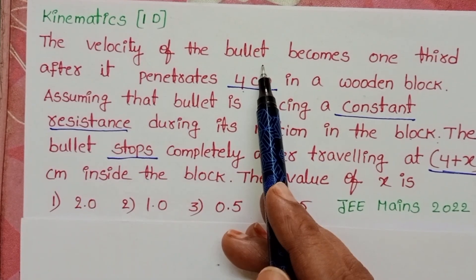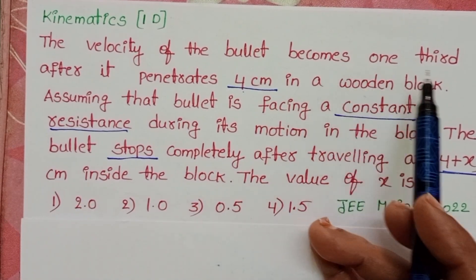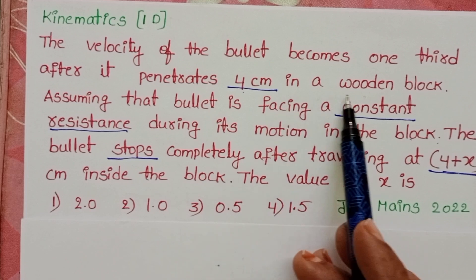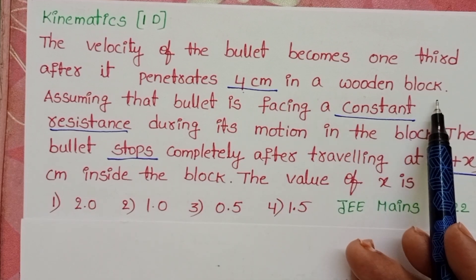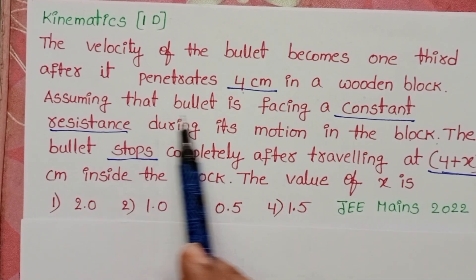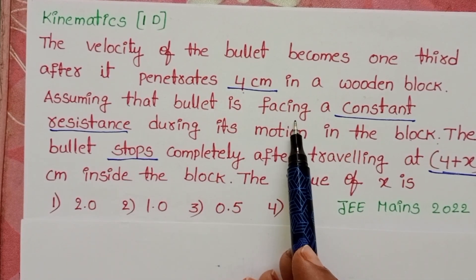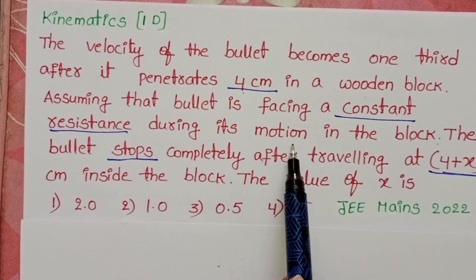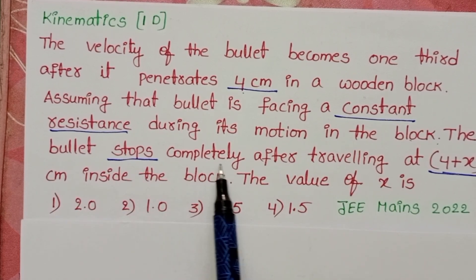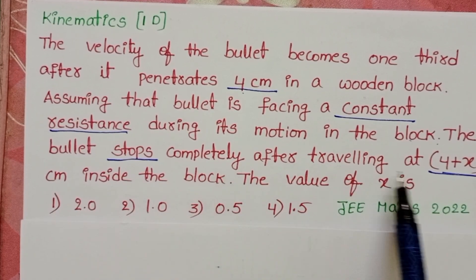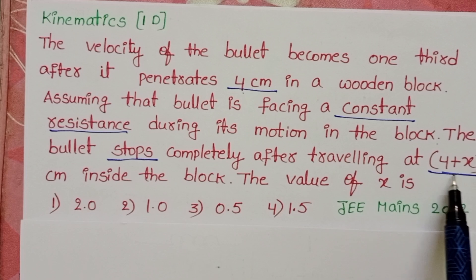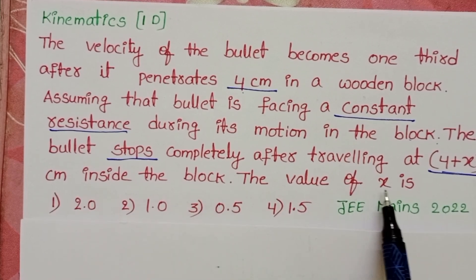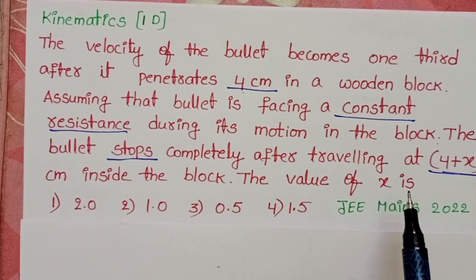The velocity of the bullet becomes one third after it penetrates 4 cm in a wooden block, assuming that the bullet is facing a constant resistance during its motion. The bullet stops completely after travelling a distance of (4 + X) cm inside the block. The value of X is to be found.